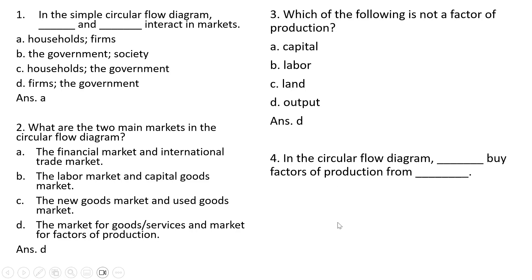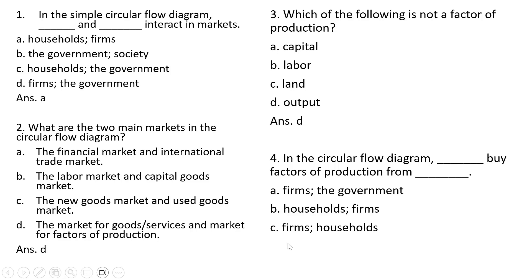Question 4: In the circular flow diagram, blank buys factors of production from blank. The correct answer is C. Firms buy factors of production from households. Answer choice C.